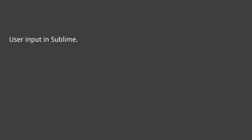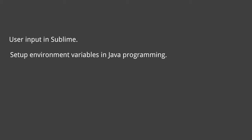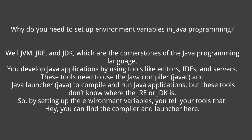In this video we will see how to take user input in Sublime in Java programming. But first we need to set up environment variables. JVM, JRE, and JDK are the cornerstones of Java programming. You develop Java applications using tools like editors, IDEs, and servers. These tools need to use the Java compiler and Java launcher to compile and run Java applications, but they don't know where the JRE or JDK is. By setting up environment variables, you tell your tools where they can find the compiler and launcher.